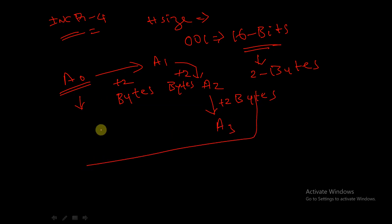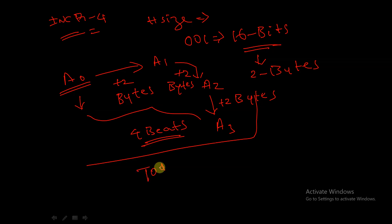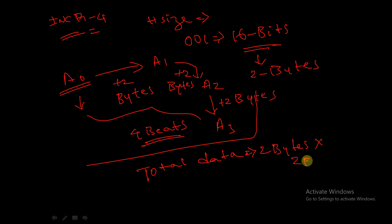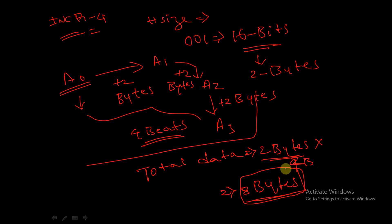So total 4 times the data is transferred. The total data transferred is equal to HSIZE — that is 2 bytes — into the burst size, that is 4. So the size of the data is 2 bytes and burst size is 4, which equals a total of 8 bytes of data transferred during this burst operation.